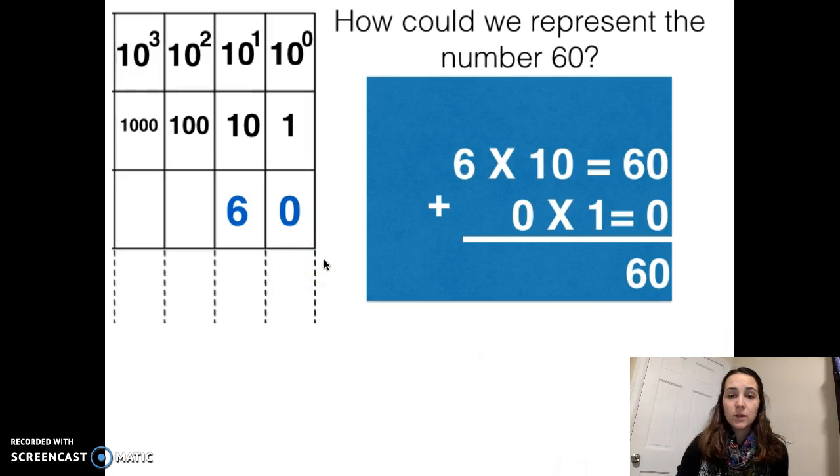If we wanted to represent a large number like 60, we would want 6 10's, which would give us 6 times 10, which is 60. But we also don't want any 1's this time. So we'll put a 0 in the 1's place, because that'll give us 0 times 1, which is 0. When we add these together, we get the total of 60.